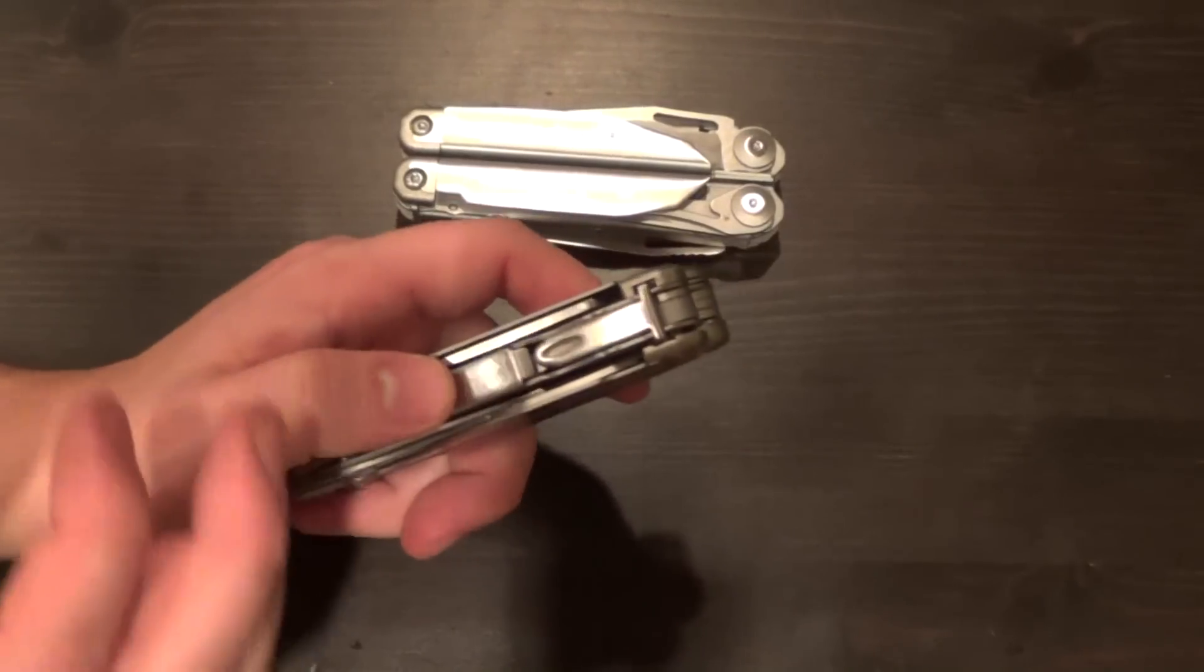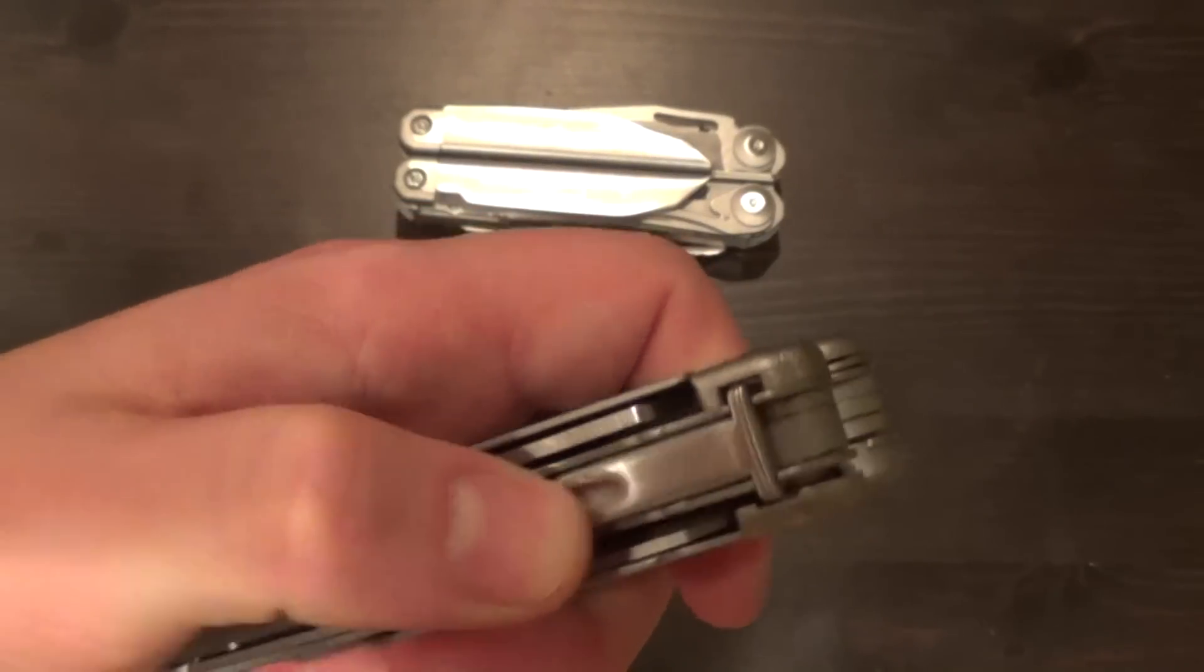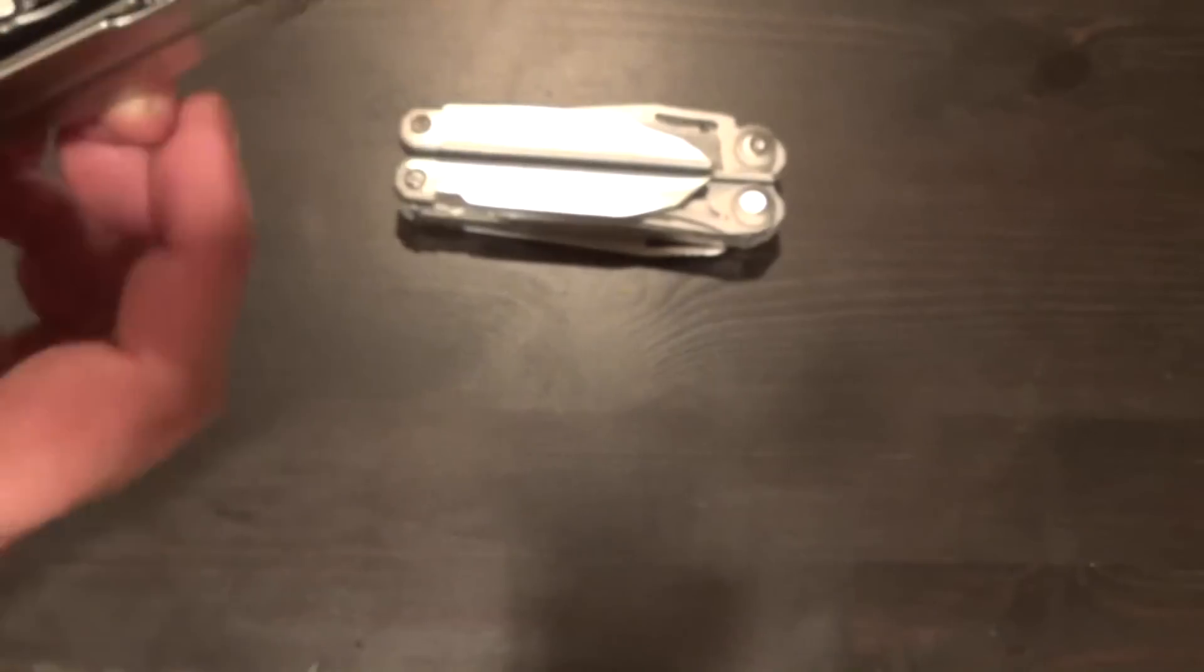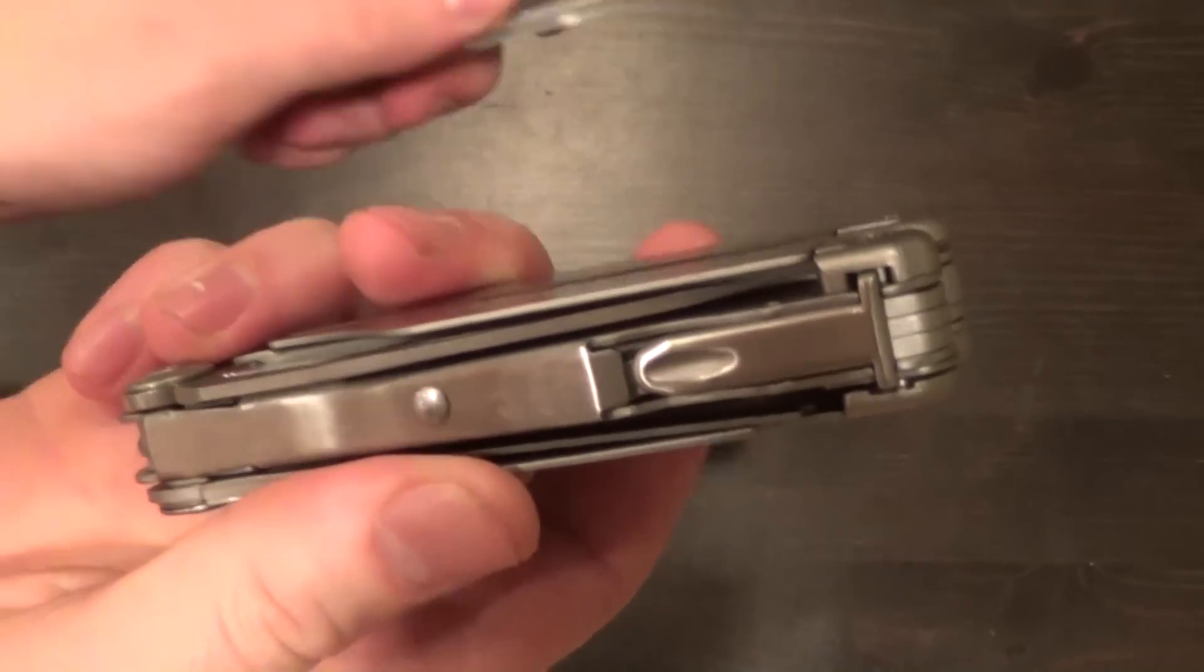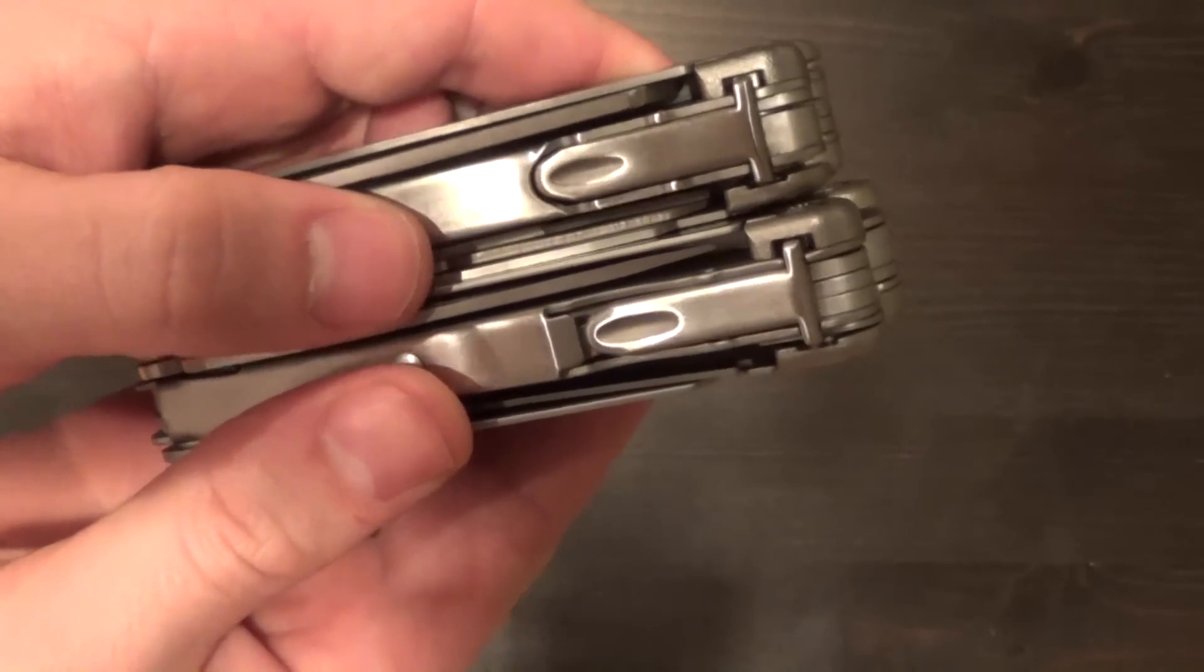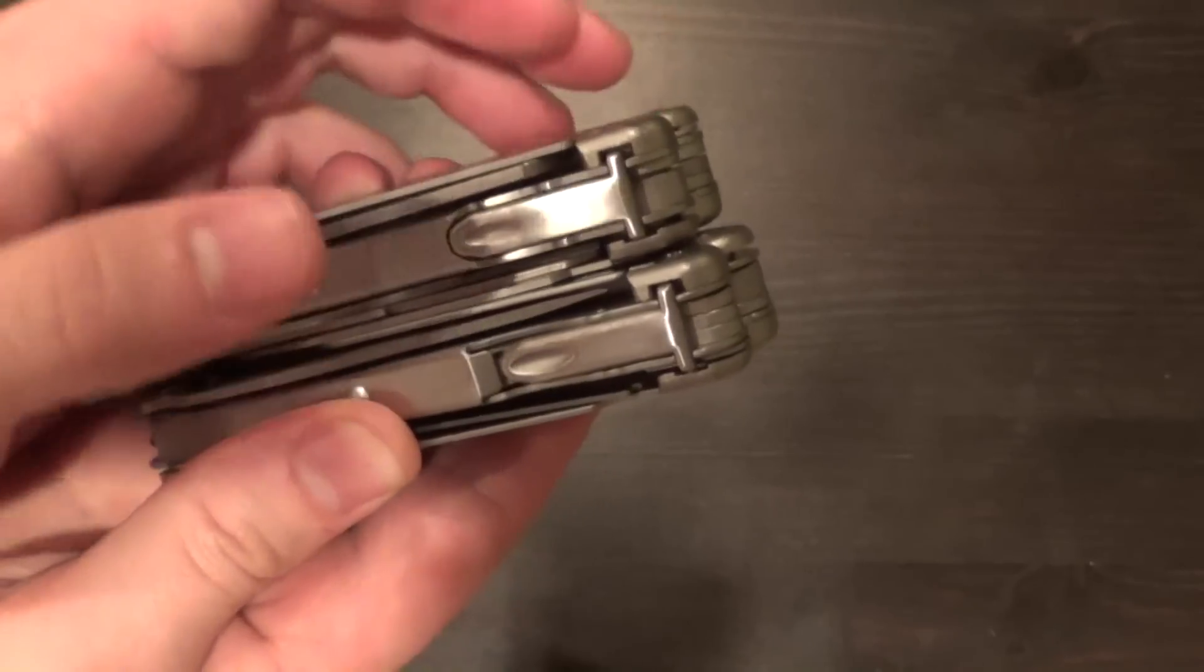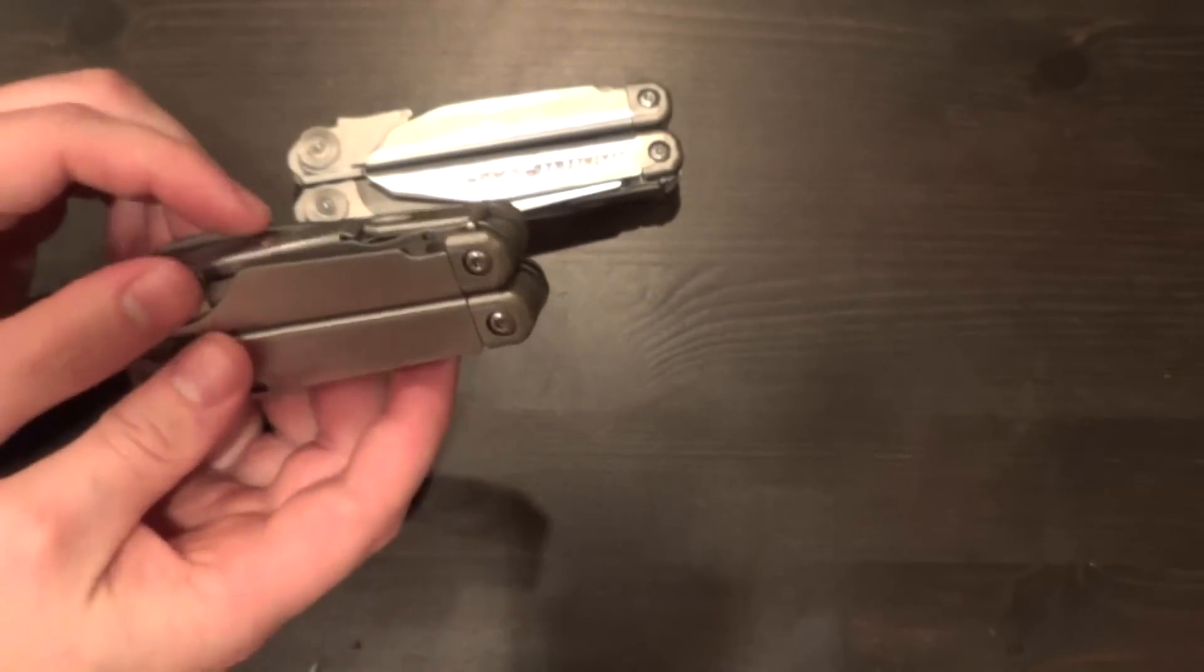One of the things I did notice is the buttons on the back of the tool for locking of the interior tools definitely work smoother. This area here has been bent down to create some more clearance. So when you compare it to this other one, you can see that they do look different. And the new one definitely works a little bit better. The old one does work good, but the new one is just a little bit more refined from the next generation of refining the tool.